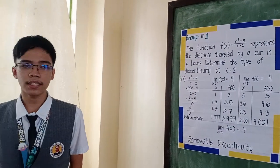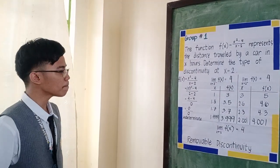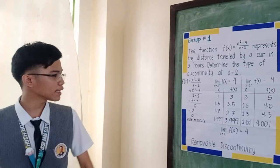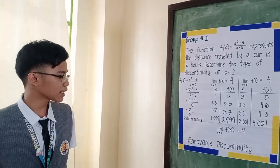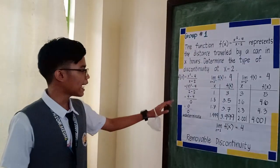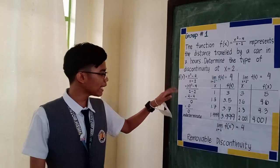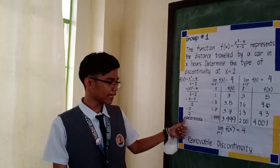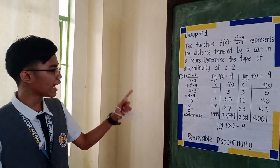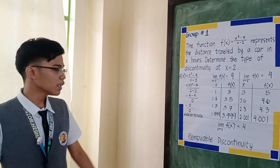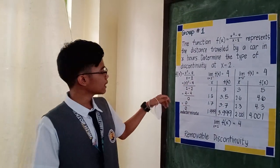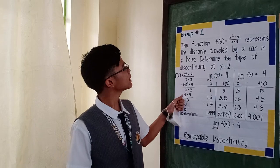Remember that there are two conditions for a discontinuity to be removable. Firstly, the value of f of c — the value of the function — should be indeterminate. And the limit of the function and f of c should not be equal.